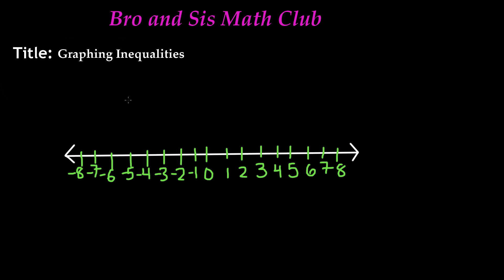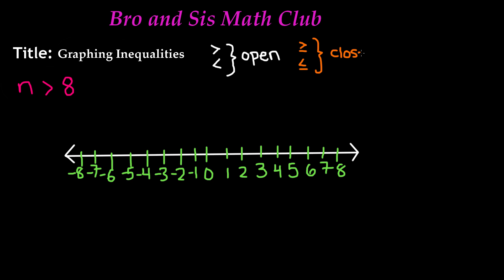So let's write an inequality. Let's say that we have the inequality n is greater than 8. So in order to graph this inequality, the first thing that we need to see is our symbol, which is a greater than sign. Now remember this rule: if it's greater than or less than, it's going to be an open circle. And if it is greater than or equal to, or less than or equal to, it is going to be a closed circle or a shaded-in circle.